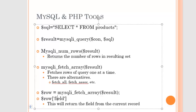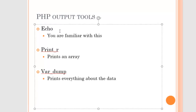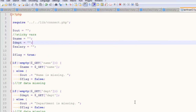Here are some output tools in PHP. You're familiar with echo — that's what you use to send output to the browser. print_r is what you use to display the contents of an array, because you can't echo an array directly. If you have something and you want to display every possible bit of information about it, then var_dump it. Those are both useful functions. Now let me get into a real example.